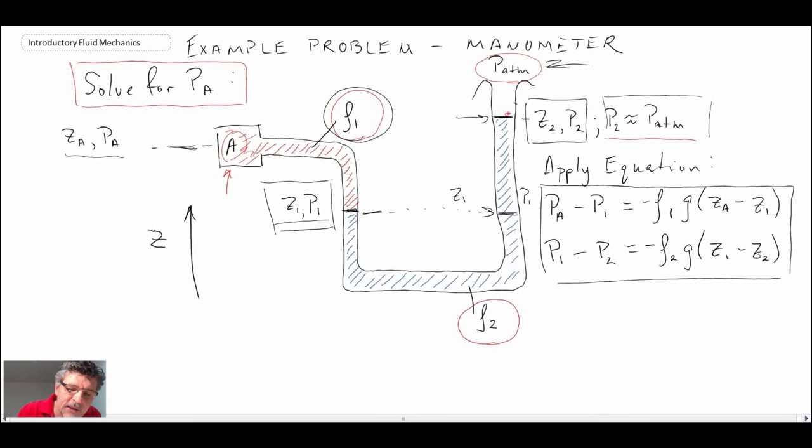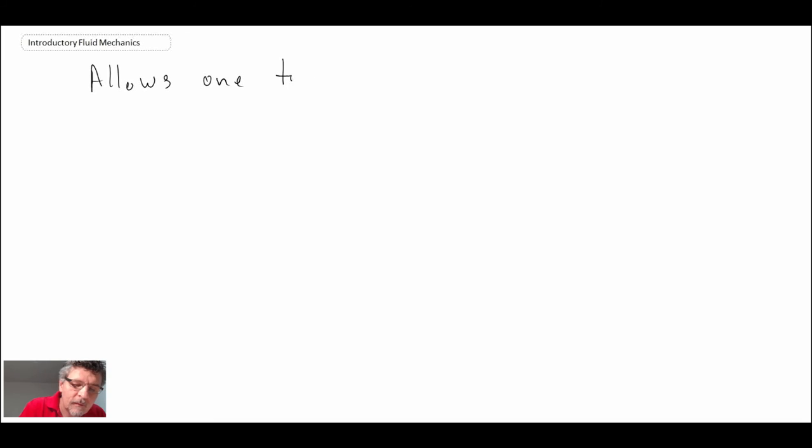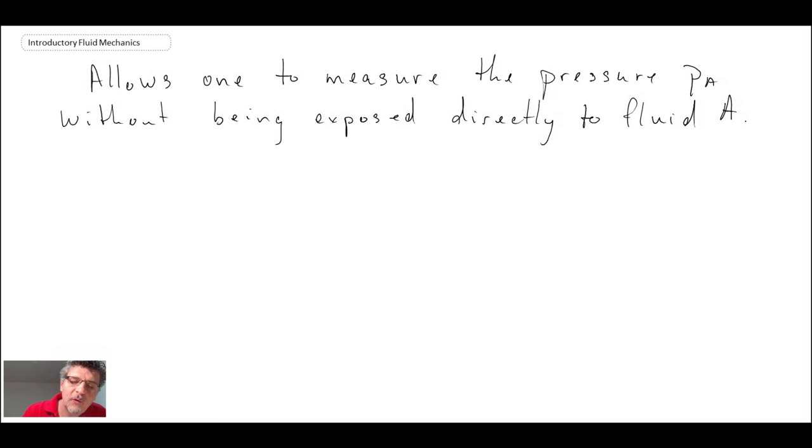You might have a case where you have a fluid that you don't want to be able to measure or expose to atmosphere. You could have a case like this where you then measure that, so you have a two fluid manometer. So it allows us to measure P_A without being directly exposed to fluid A, and that would be one advantage of it.